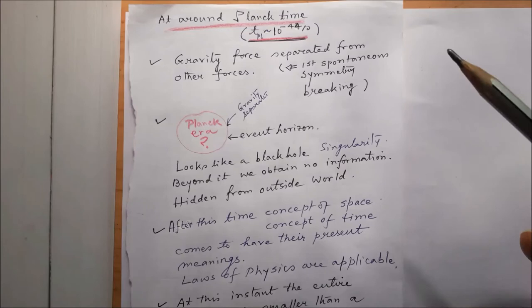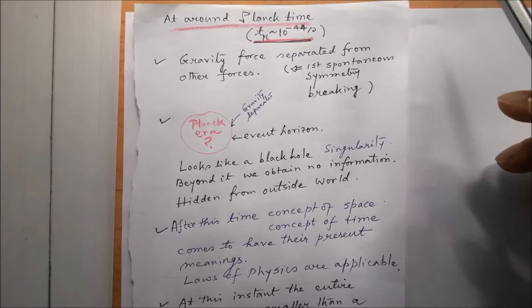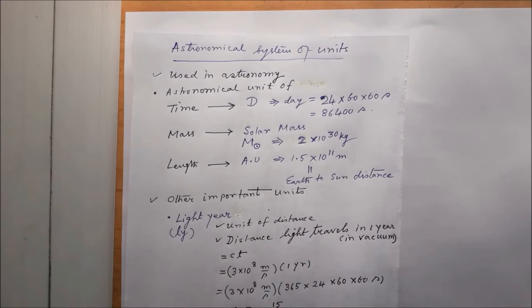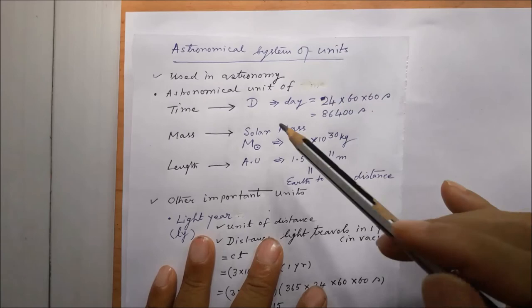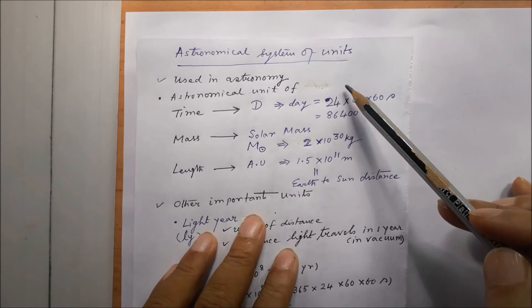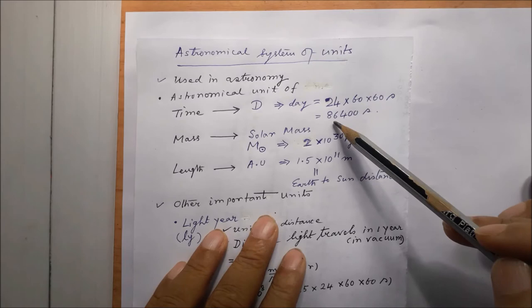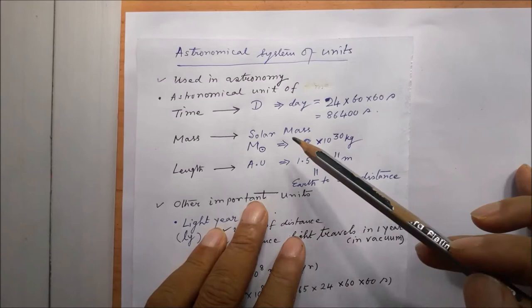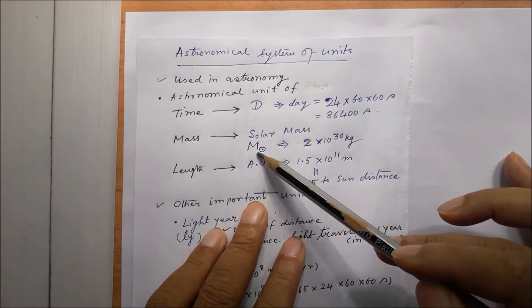We will now come to the astronomical system of units, which is used in astronomy. The astronomical unit of time is one day, denoted by capital D, which is 86,400 seconds — 24 hours a day, 60 minutes per hour, and 60 seconds per minute, that makes up 86,400 seconds.